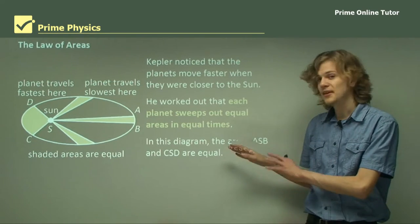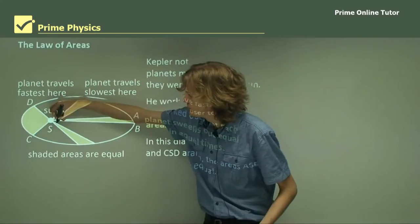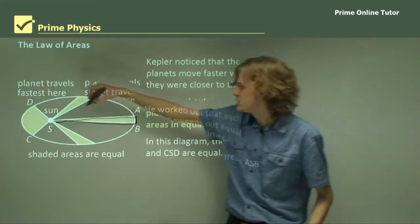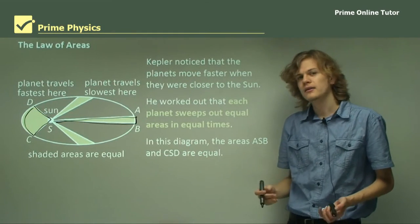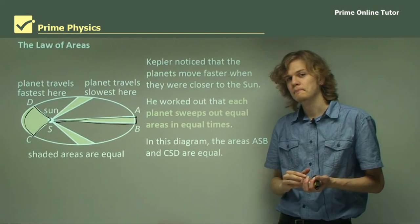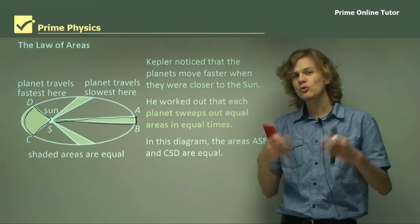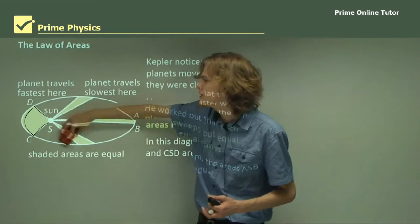He worked out that each planet sweeps out the same area in the same times. That means that it takes a planet the same time to go from A to B as it does to go from C to D because it's moving faster when it's close to the sun. In this diagram, the areas ASB and DSC are equal, and they're covered by the planet in the same time. That's why it's called the law of areas.